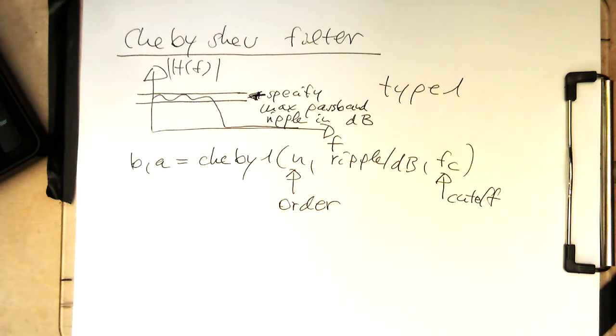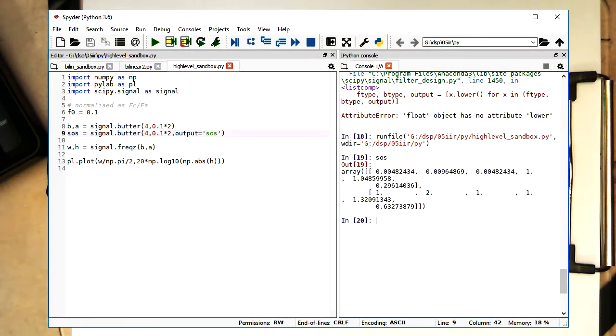And so that defines us the ripples in the passband. So let's see, let's change here our butter to Chebyshev 1. So to Chebyshev 1, we just need to add the ripple here, let's say we allow 10 decibel ripple here.